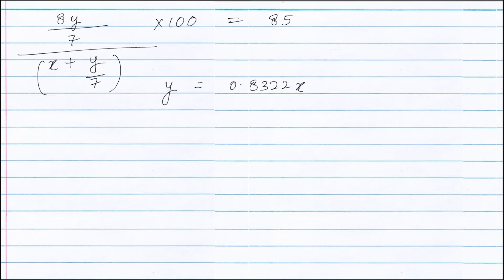Now as given in the question, weight of pure calcium carbide is 1000 kg. Therefore 8y by 7 equals 1000 kg. Putting the value of y we get 8 times 0.8322x divided by 7 equals 1000 kg. Solving we get the value of x as 1051.5 kg.